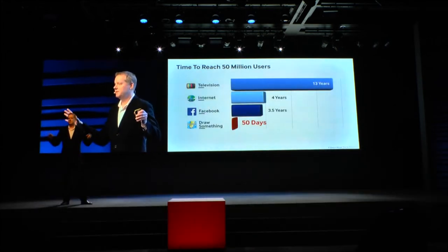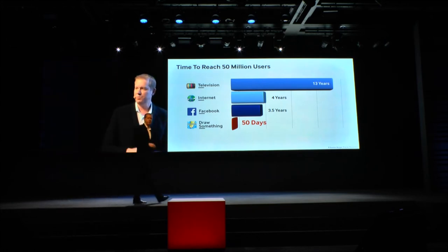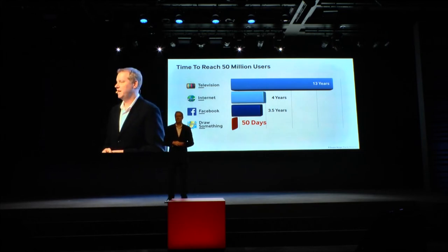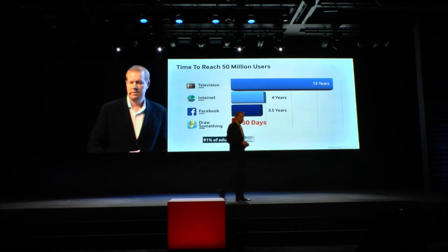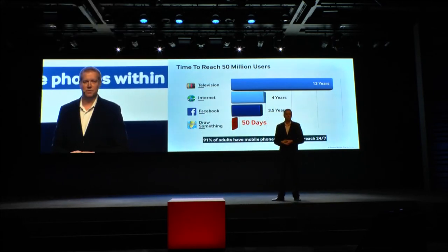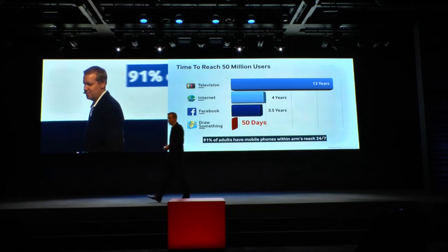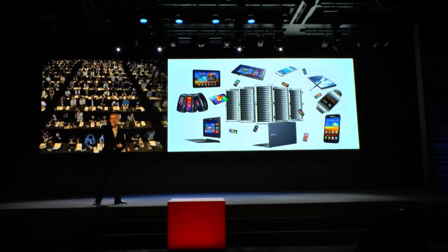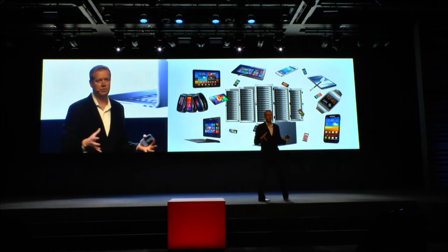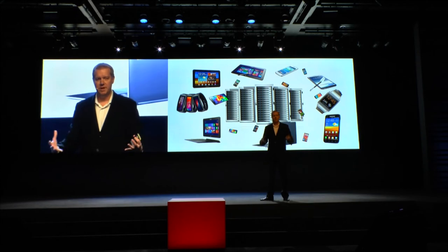Think about the time it took to reach 50 million users. It took television 13 years to get there. Internet: 4 years. Facebook: 3 and a half. Draw Something: 50 days. So that pace of change is increasing dramatically. In fact, 91% of adults have mobile phones within arm's reach 24/7 — in case you get that work phone call or need to check that Facebook status. It's right there in the mobile internet era. Think about this proliferation of devices all around the central data center or server, and the infrastructure requirements that amount of users and data starts to drive.